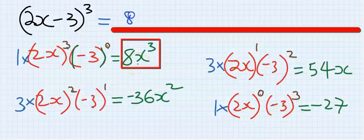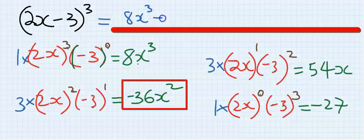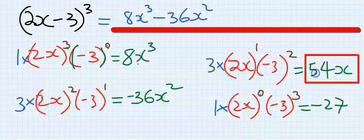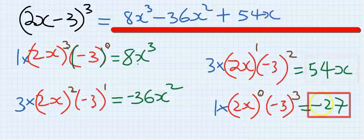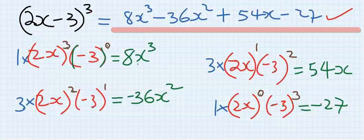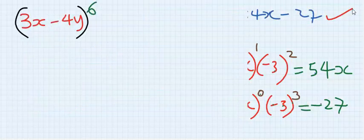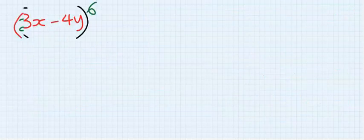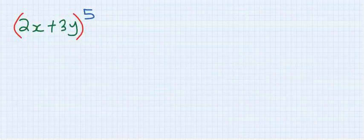So we write 8x³ minus 36x² plus 54x minus 27. This is our final result. You can try similar problems using Pascal's Triangle.